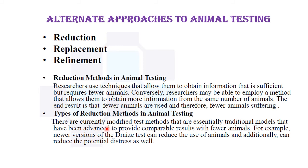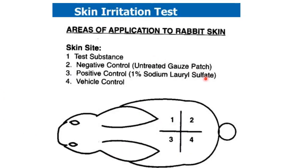There are currently modified test methods that advance traditional models to provide comparable results with fewer animals. For example, a new version of the Draize test can reduce the use of animals and reduce potential distress. The Draize test is useful for acute toxicity of topical applications. Instead of using four different animals, a single animal is used with the test area separated to apply the test substance, negative control, positive control, and vehicle control — reducing the number of animals used.